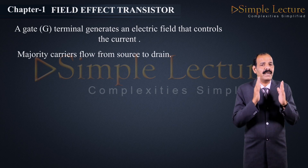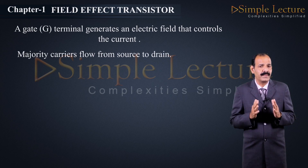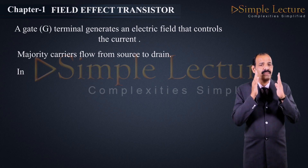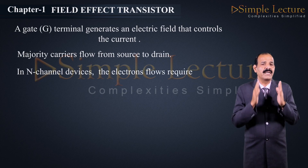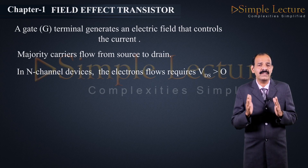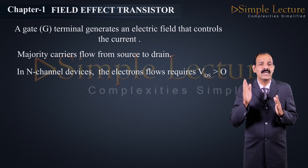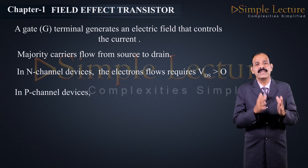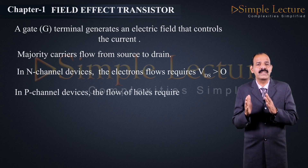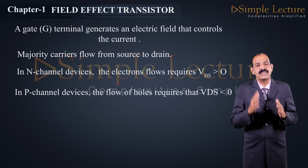Majority charge carriers flow from source to drain. In the case of N-channel FETs, electron flow requires VDS (drain-to-source voltage) greater than 0 volts. In the case of P-channel devices, the flow requires VDS less than 0 volts.